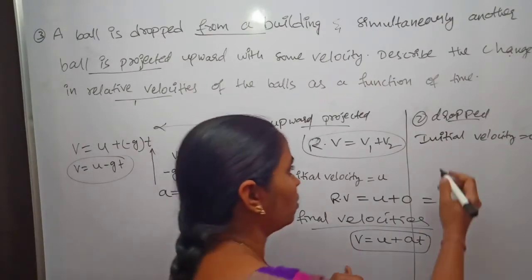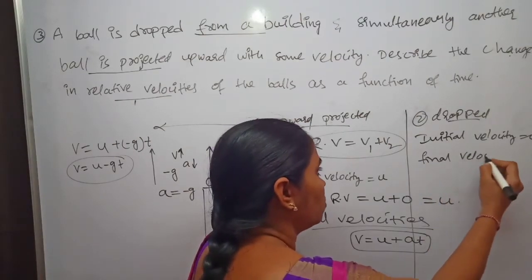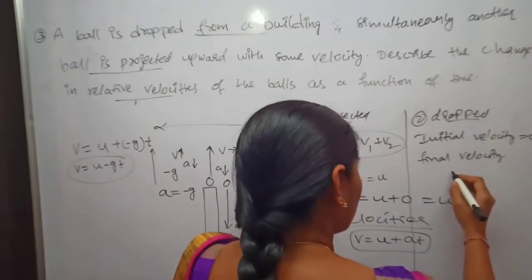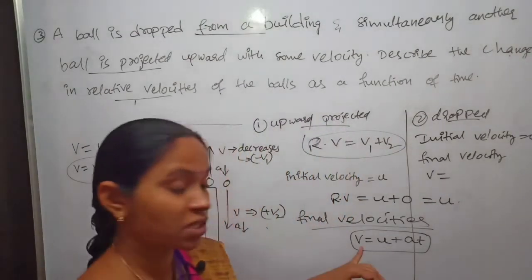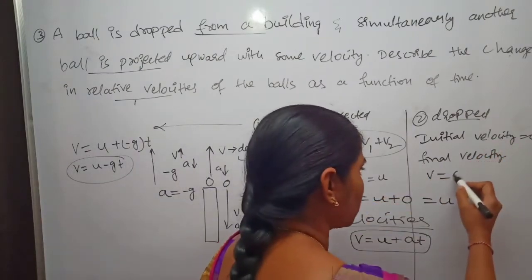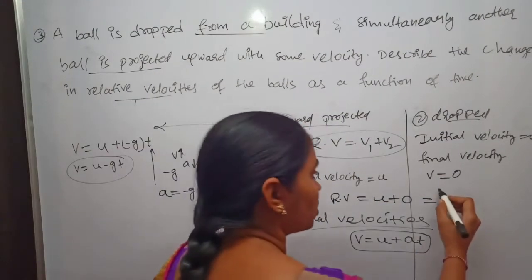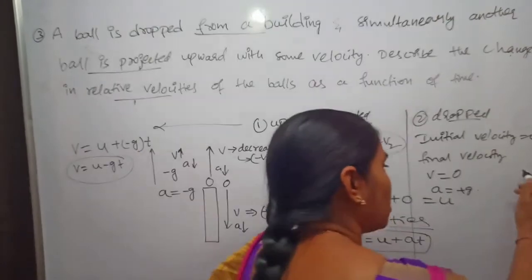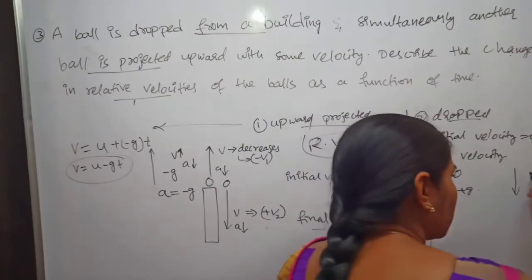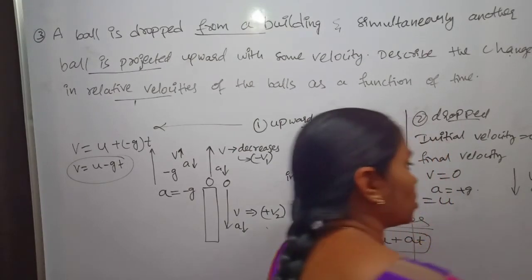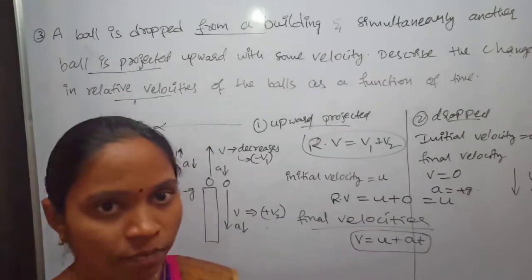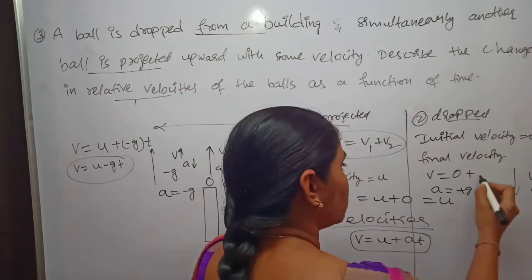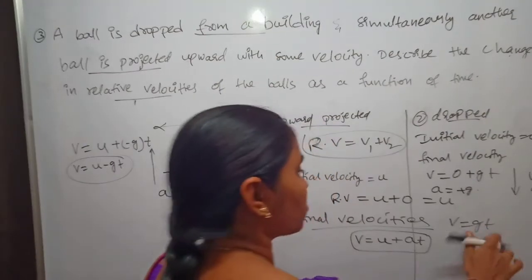For the ball which is dropped, the final velocity v is calculated with initial velocity u equal to zero and acceleration a equal to plus g, because both the velocity and acceleration due to gravity are in the downward direction. Therefore v equals 0 plus g times t, so v2 equals gt.